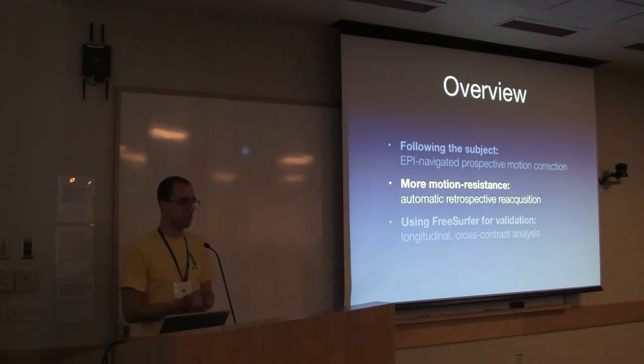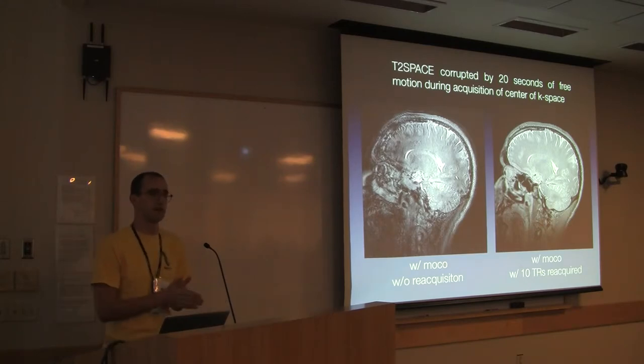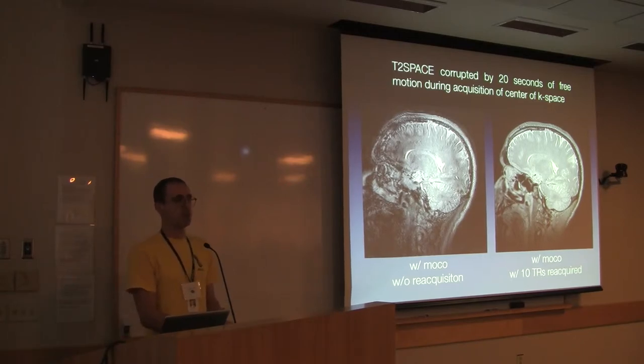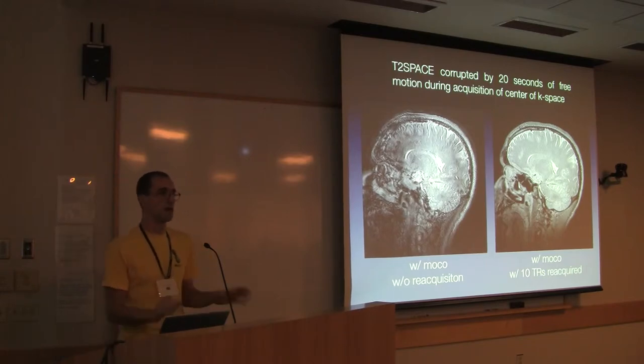Now we're going to talk about the second part of this system which does automatic reacquisition. This is the slide where you're all going to suddenly think that I've been lying to you about the fact that this works. This is a T2 space scan where the subject thrashed for the central 20 seconds of the scan. Again, not huge motions but continuous motion for 20 seconds. If we just did our motion correction then we get the image on the left which isn't awesome. If we do our motion correction and we tell the sequence to automatically reacquire the parts of the scan that were motion damaged then we get the image on the right. That's obviously a lot better. I'm going to talk about why we do reacquisition as well, why motion tracking just isn't enough.